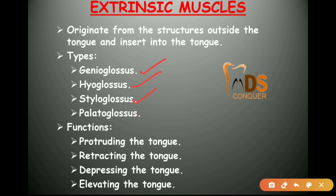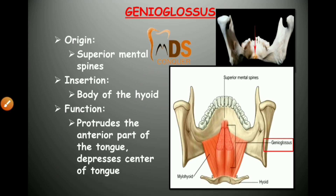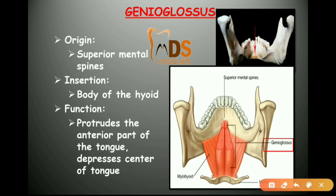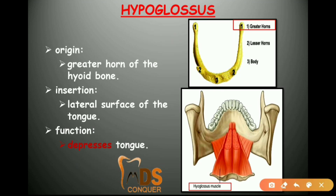The extrinsic muscles are genioglossus, hyoglossus, styloglossus, and palatoglossus. Their functions include protrusion, retraction, depression, and elevation of the tongue. The genioglossus originates from the superior mental spine, inserts into the body of the hyoid bone, and protrudes the anterior part and depresses the central part of the tongue. The hyoglossus originates from the greater horns of the hyoid bone, inserts into the lateral surfaces of the tongue, and depresses the tongue.